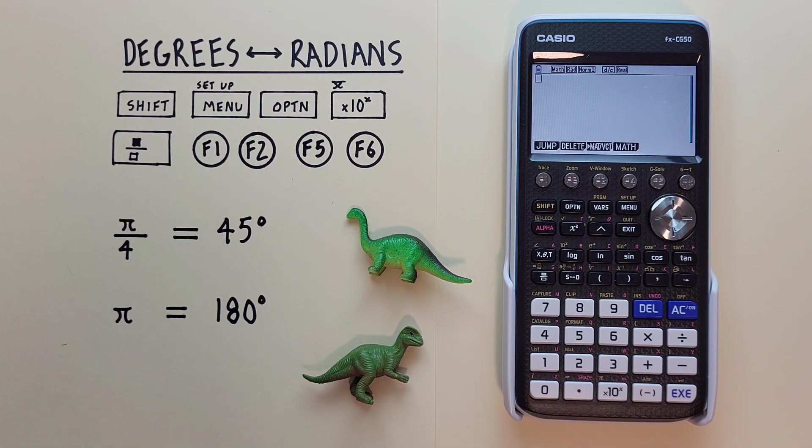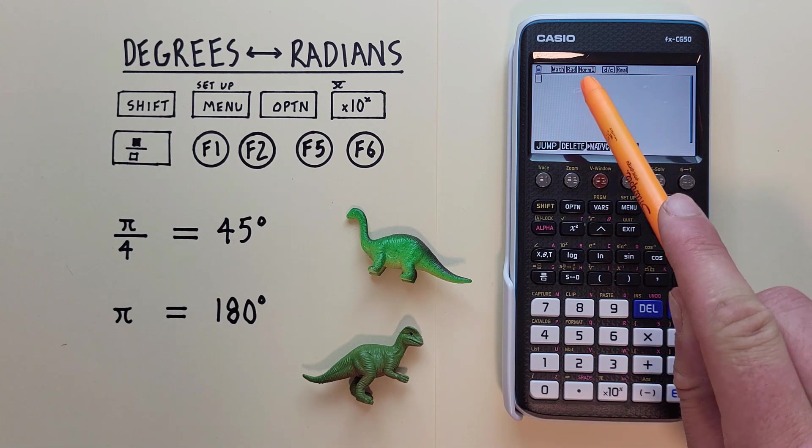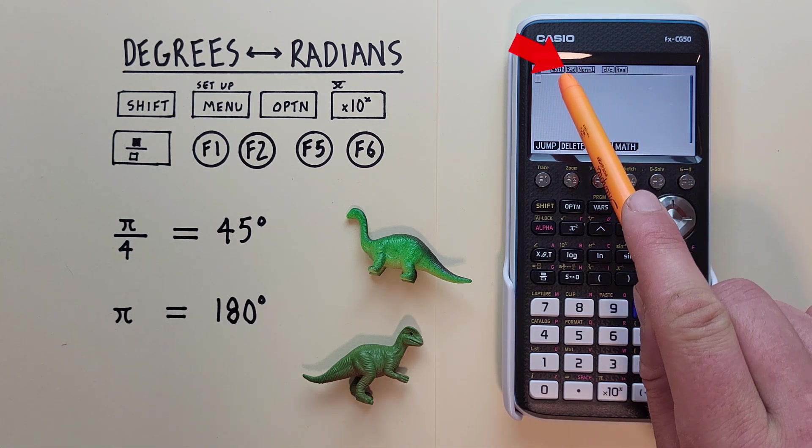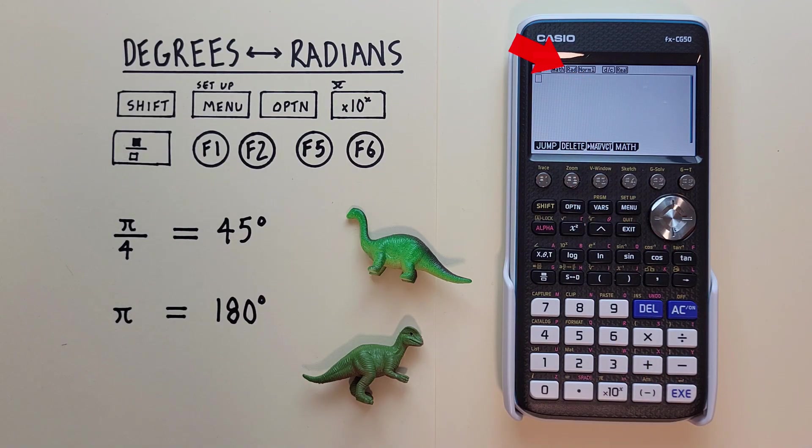The first step is to change our calculator to the mode we want our results in. You can see here at the top of my screen it says Rad, or radians mode. We want to change that to degrees mode.